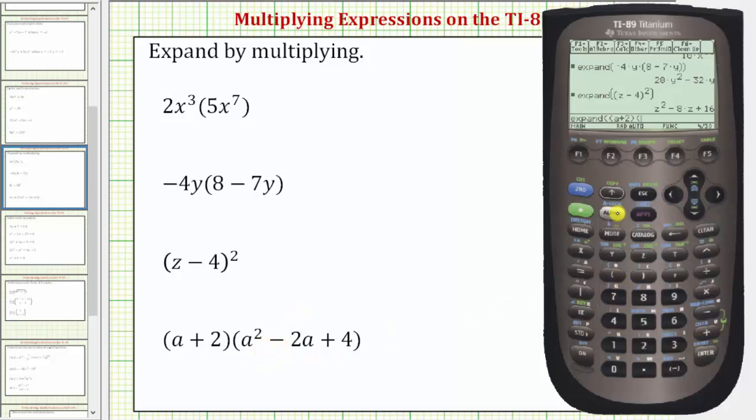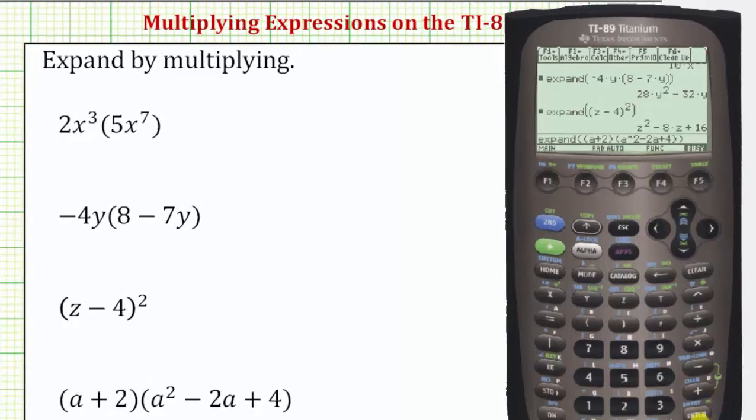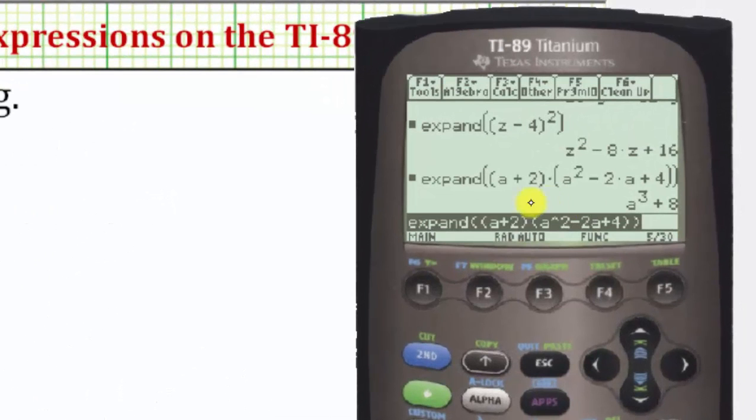a squared would be alpha equal sign, raise the power of two, minus two, alpha equal sign, plus four, close parenthesis, and close parenthesis for expand, and enter. And notice how the product is equal to a cubed plus eight.